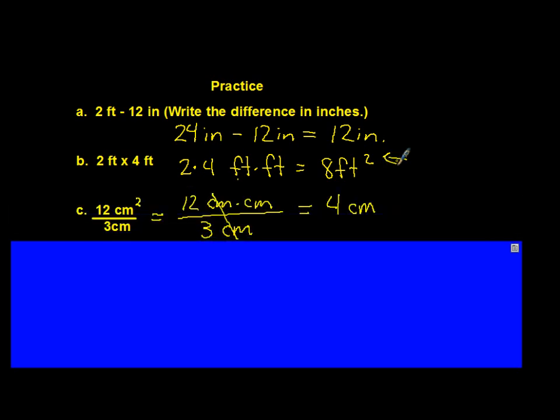Number 3, or letter C here. We have 12 square centimeters. So centimeters times centimeters. We can do the math. 12 divided by 3 is 4. We cancel out the centimeters, and we end up with 4 linear centimeters.